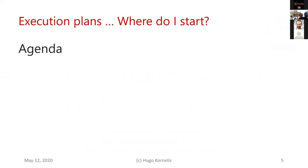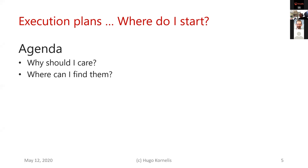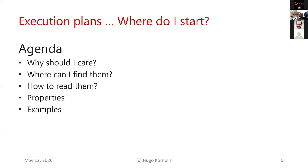So where do we start talking about execution plans? The agenda is: first, why do we even care about execution plans? After that, because you do care, you'll want to know how to find them, how to read them, and I'm going to talk about properties. At the end I want to run through some examples to show how you can start reading quite simple execution plans and what you can already glean from them.